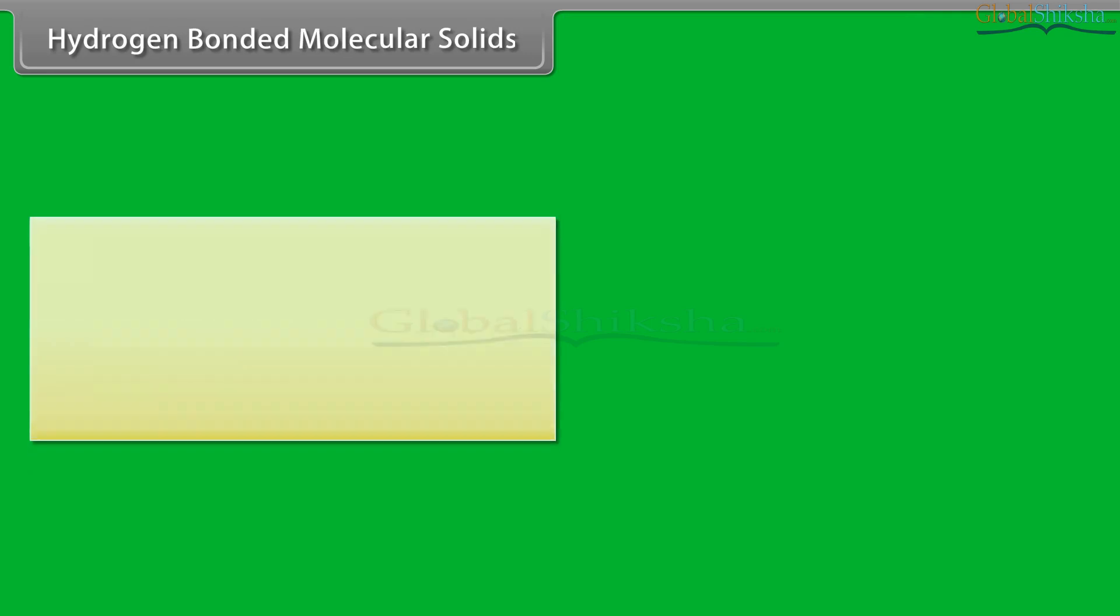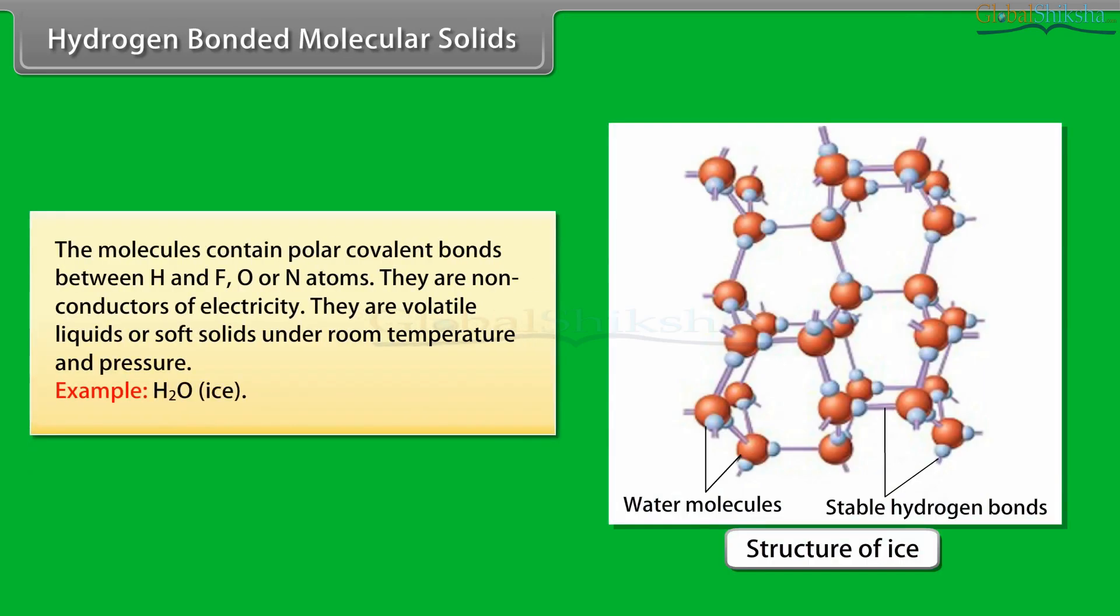Hydrogen bonded molecular solids contain polar covalent bonds between H and F, O, or N atoms. They are non-conductors of electricity. They are volatile liquids or soft solids under room temperature and pressure. Example: H2O ice.